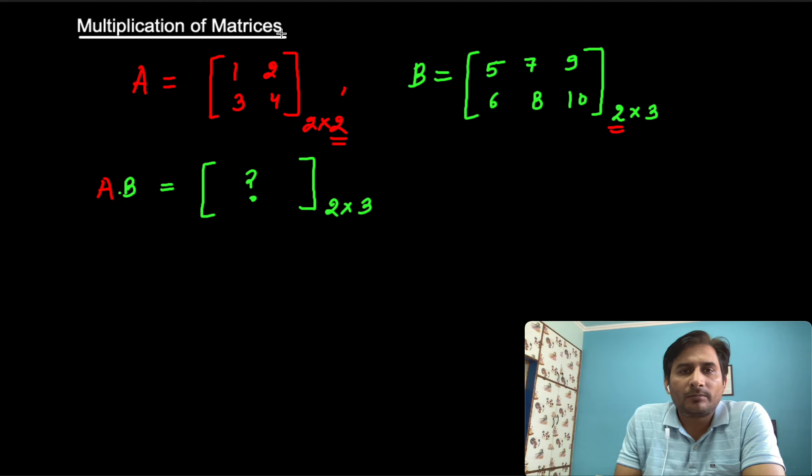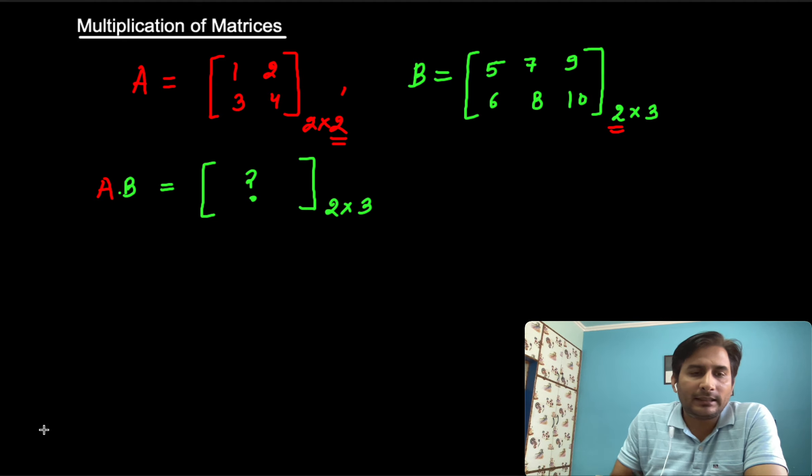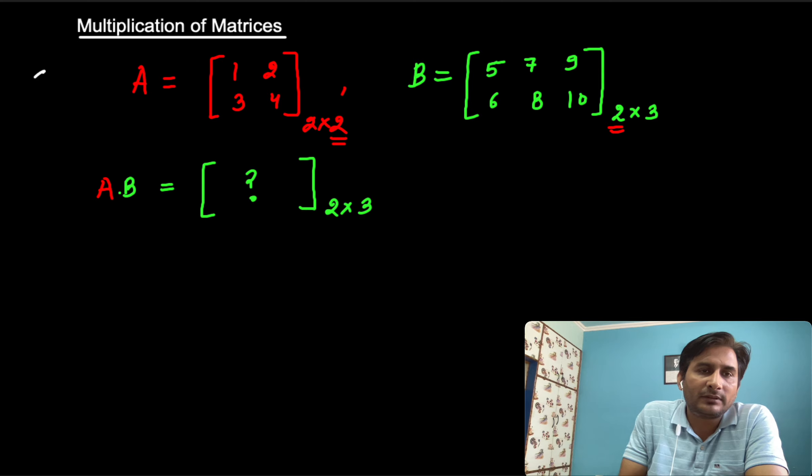It is the multiplication of matrices. Suppose a matrix A — let us understand this multiplication with the help of an example.